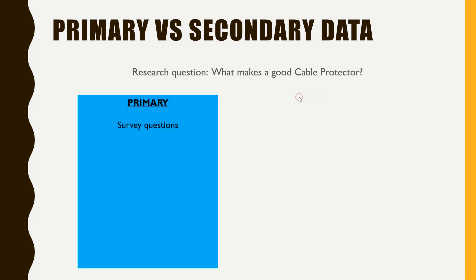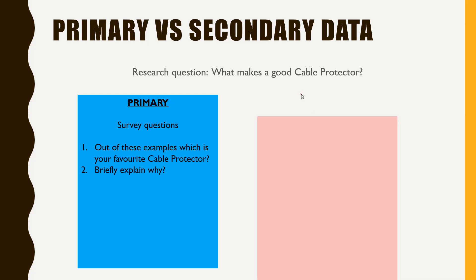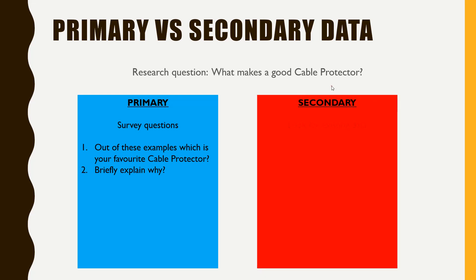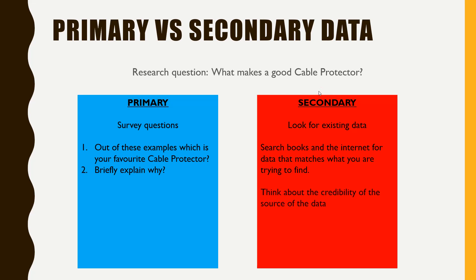To answer a research question you need to use both primary and secondary data. For primary data, you might ask survey questions such as 'Out of these examples, which is your favourite cable protector?' and 'Briefly explain why' — those two questions can help answer one research question. For secondary data, search books or the internet for data that matches what you're trying to find out. Think about the credibility of your source, and please do not use Wikipedia — that is not credible. You might use it as a starting point, but do not use it in your referencing.